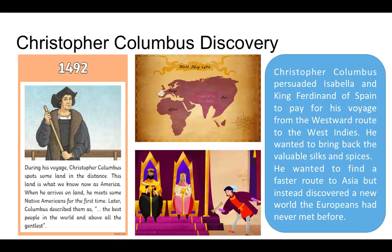In these pictures here you can see a little map. This was a map created in 1492 and you can see Christopher Columbus in his boat, hoping to travel from Europe all the way over to Asia. During his voyage Christopher Columbus spots some land in the distance. This land is what we know as America. When he arrives on land he meets some Native Americans for the first time. Later Columbus described them as the best people in the world and above all the gentlest.